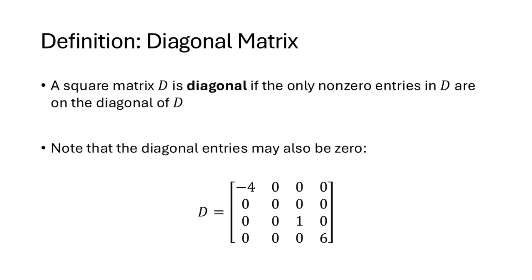A square matrix D is diagonal if its only non-zero entries are on the main diagonal. In this case we have a diagonal 4x4 matrix, and notice that the diagonal entries themselves may be zero, but the only non-zero entries are on that main diagonal.